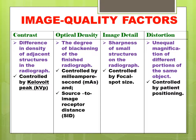Optical density is the degree of blackening of the finished radiograph, controlled by mAs (milliampere-seconds) and SID (source to image receptor distance).